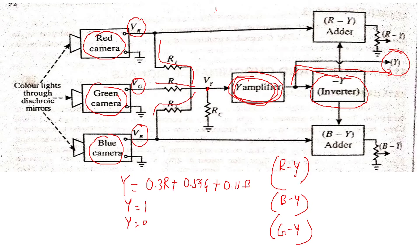It is not necessary to send all three color difference signals. Analysis shows that from any two difference signals, we can afterward generate all three primary colors. Therefore, only two signals need to be transmitted. The most convenient to transmit are B minus Y and R minus Y. From those two, we can generate the third one and then recover all primary colors.